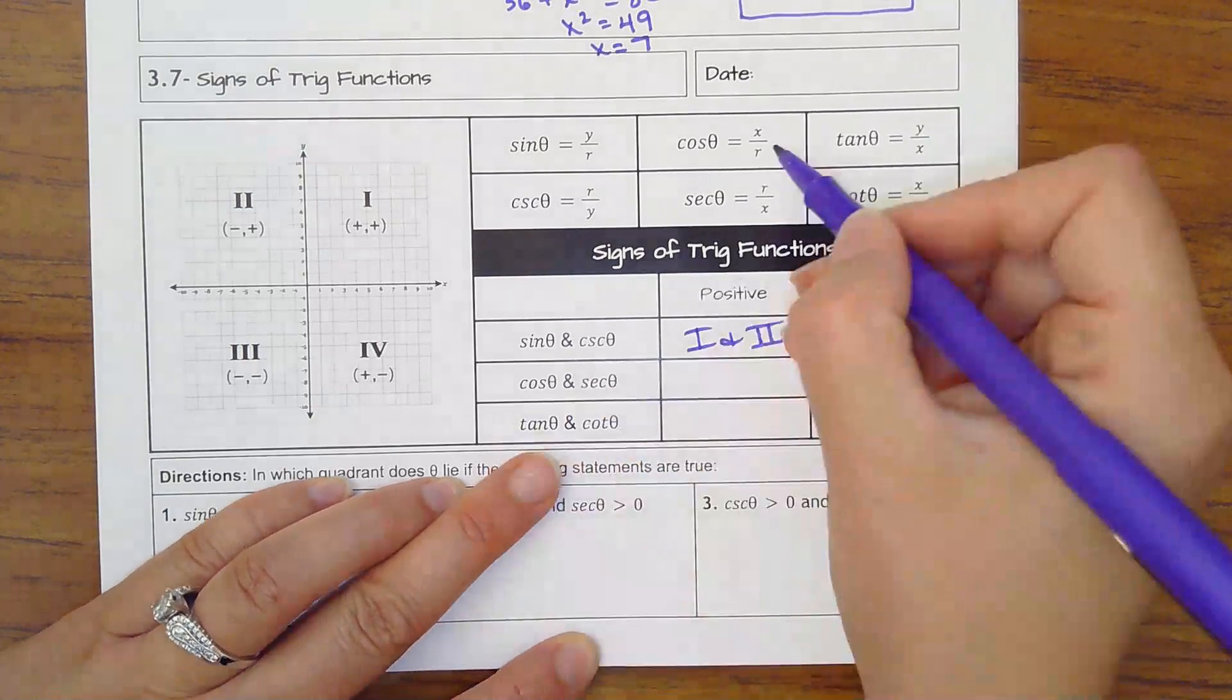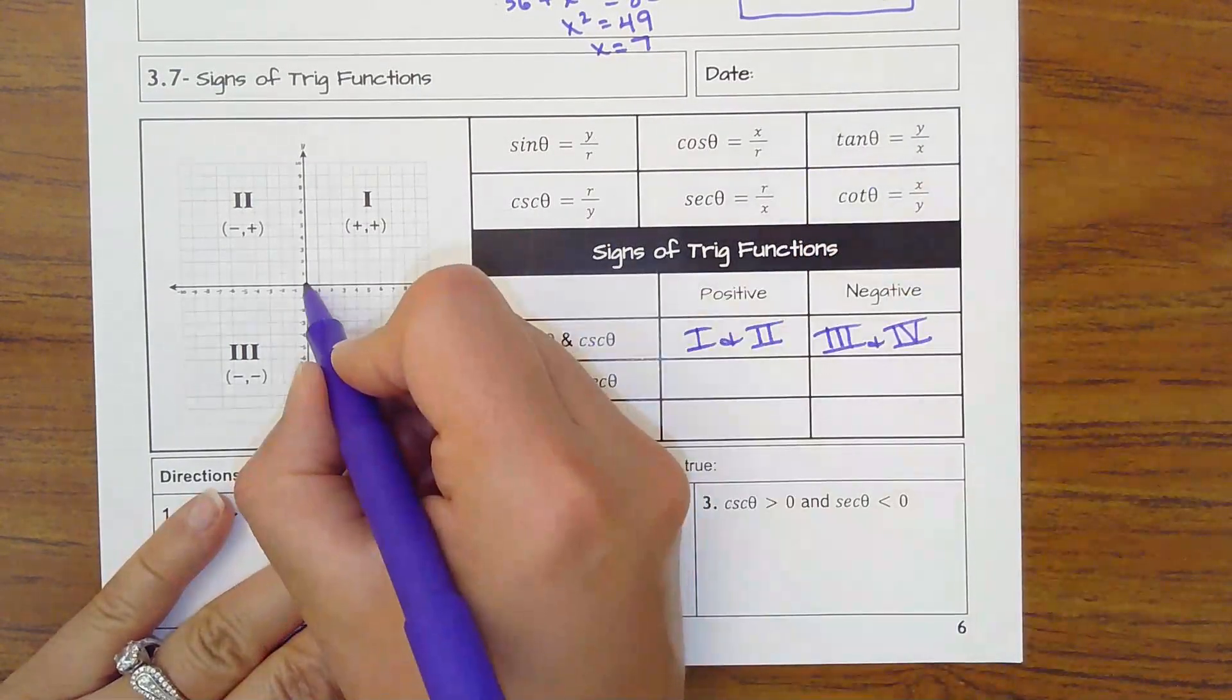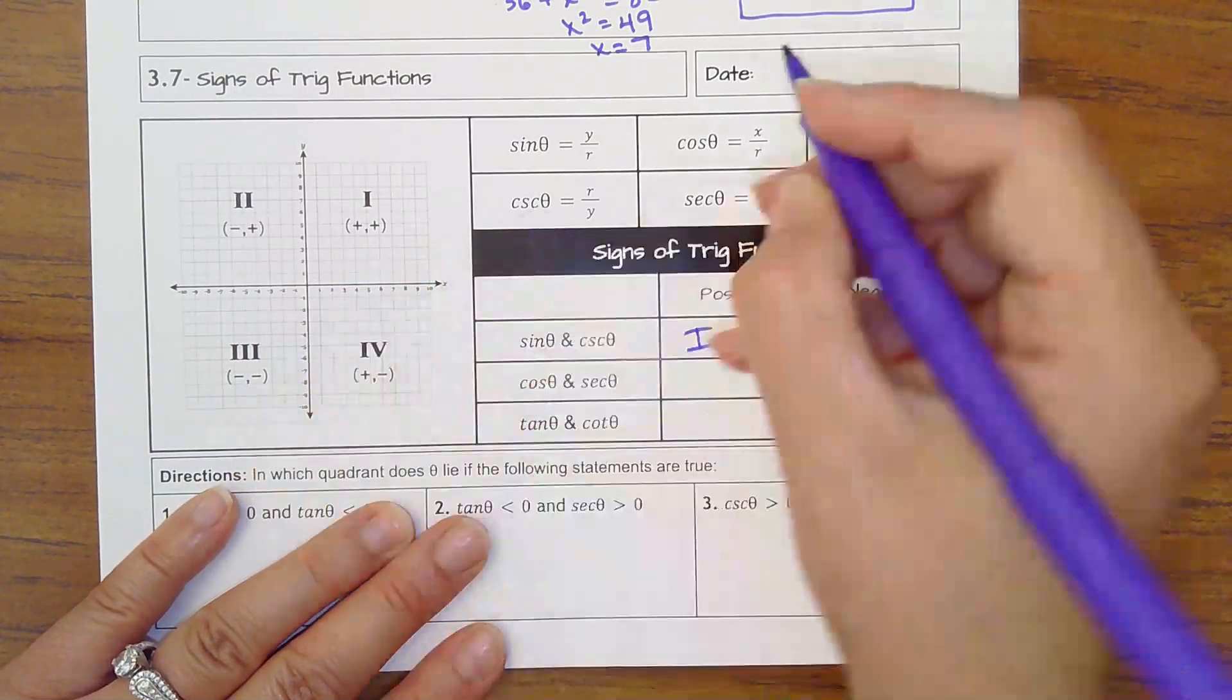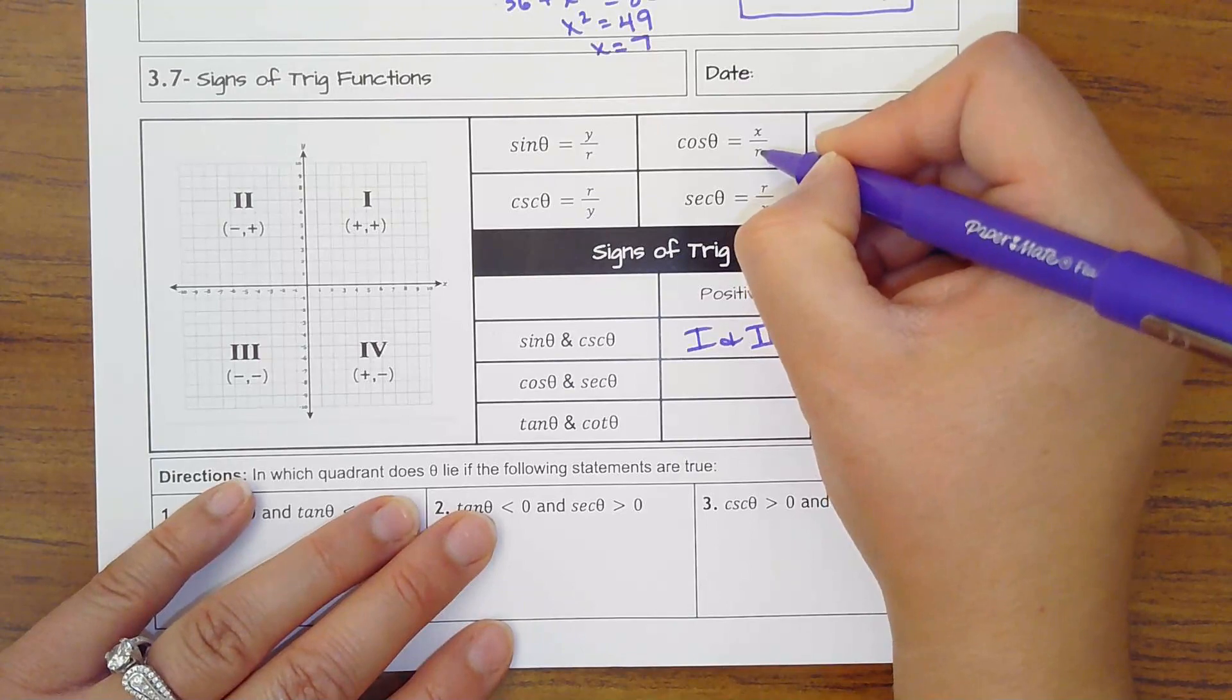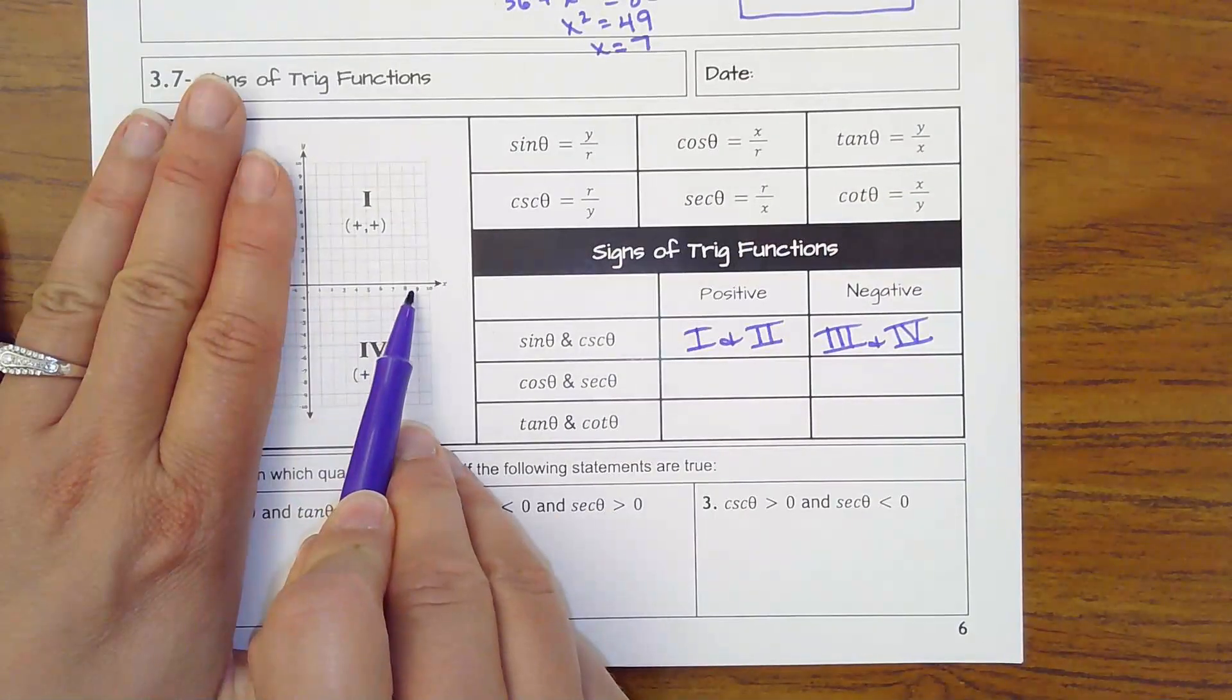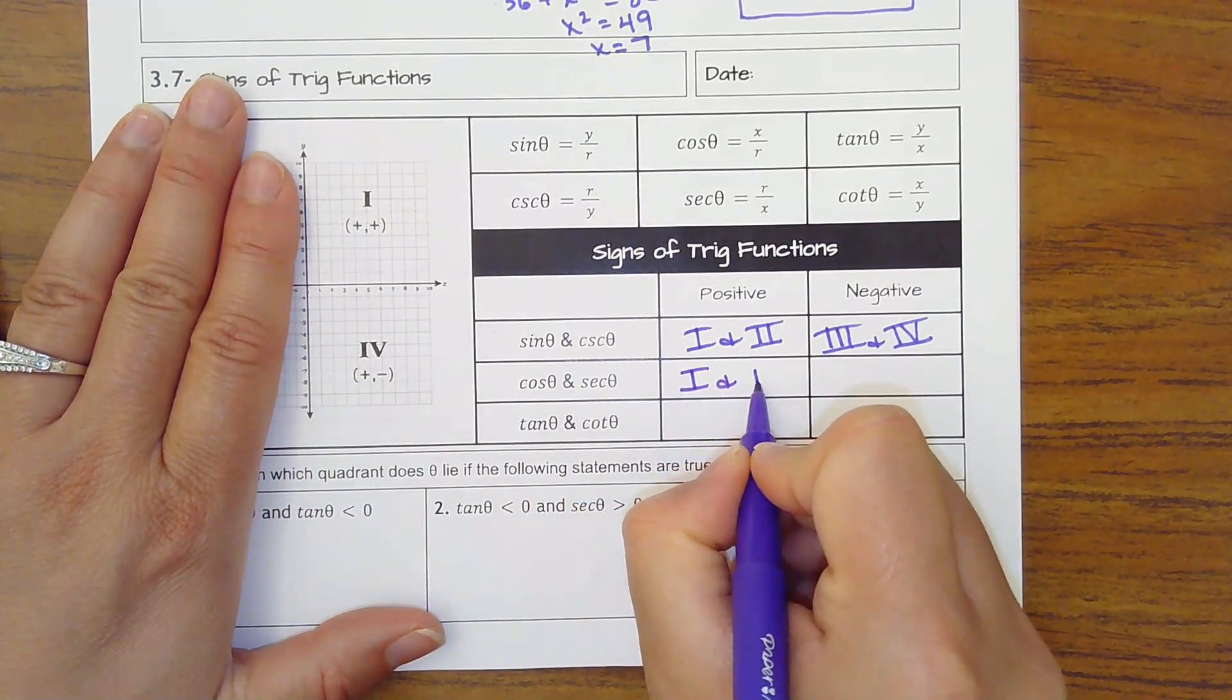Cosine and secant go together because they deal with the adjacent side. So when we have our triangle and here's our angle, adjacent is always the x over our positive radius. And so when x's are positive, that's when they go to the right. So x's are positive in quadrant 1 and quadrant 4.